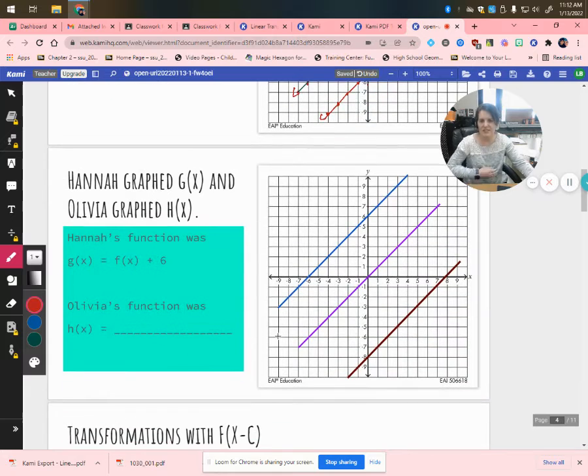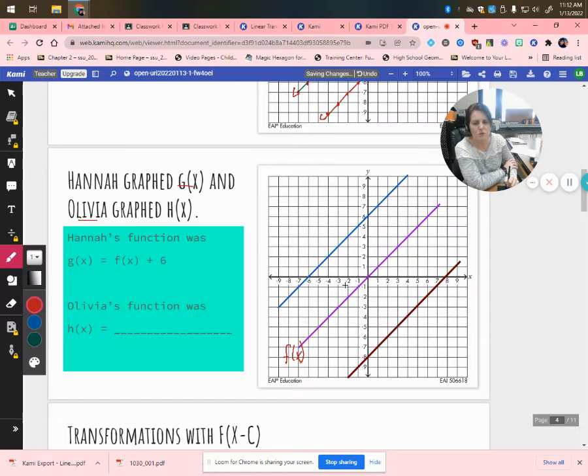Alright, so let's try this next one here. Ms. Hannah graphed g(x), and Ms. Olivia graphed h(x). Hannah's function was g(x), which is equal to f(x) plus 6. So we're going to label these. Obviously this one is f(x). We can recognize it's the parent function. So which one would be Hannah's? If we did f(x) plus 6, that gives us g(x). So which one shifted up 6 units? And it is, of course, the blue line. So this is g(x).